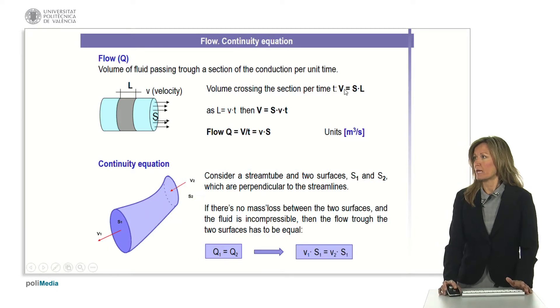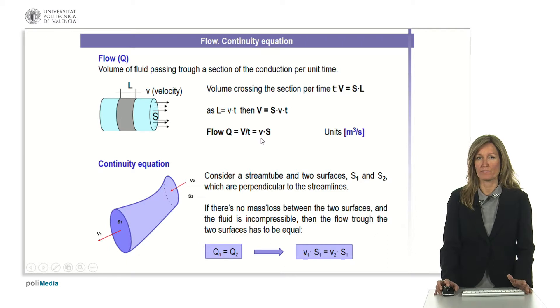Then, making this simple calculation, considering the volume to be section times length and using the definition of space related to velocity, we can simply do that change, so finally the flow defined as volume per unit time is equal to velocity times section and the units for the flow are cubic meters per second.